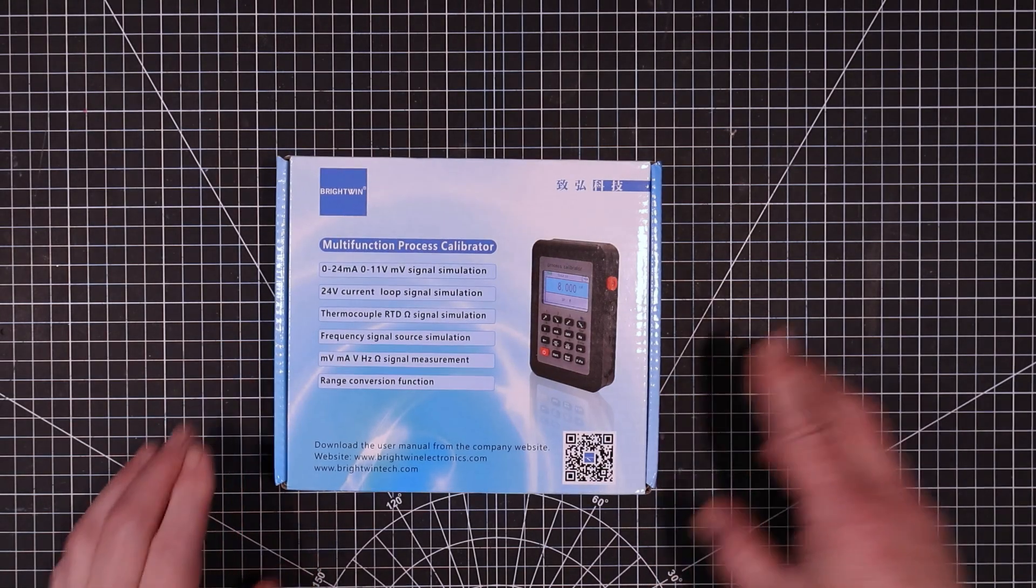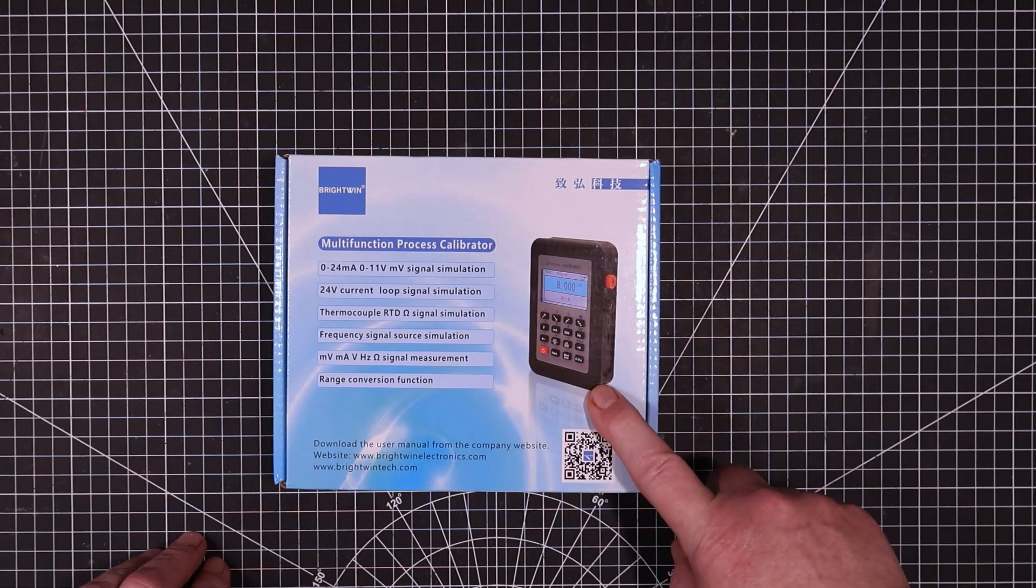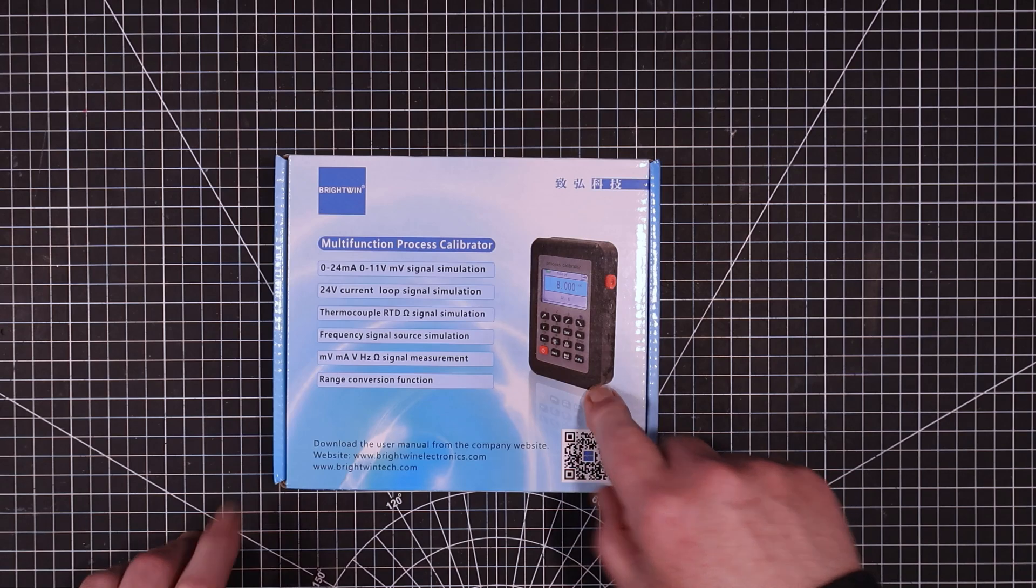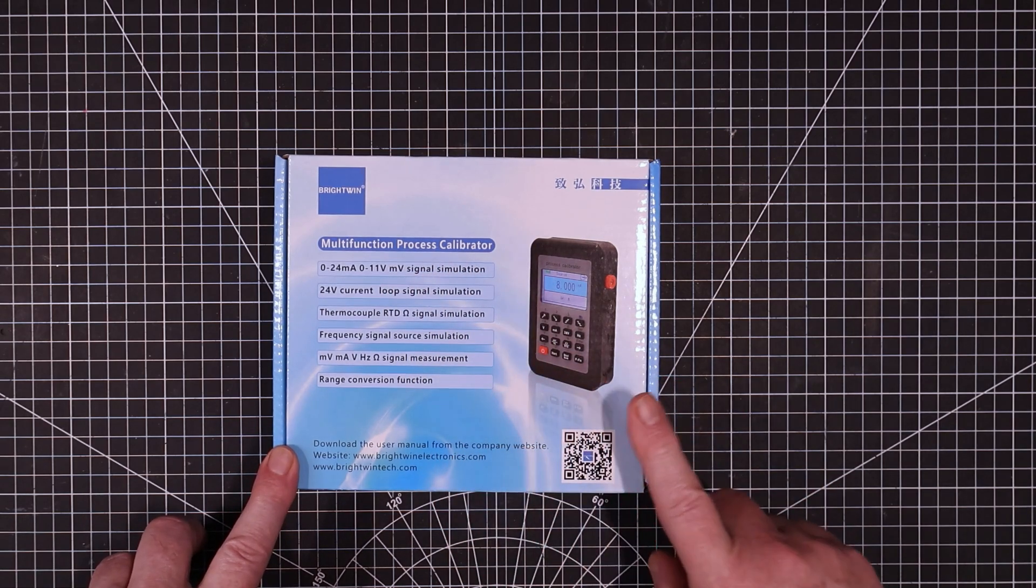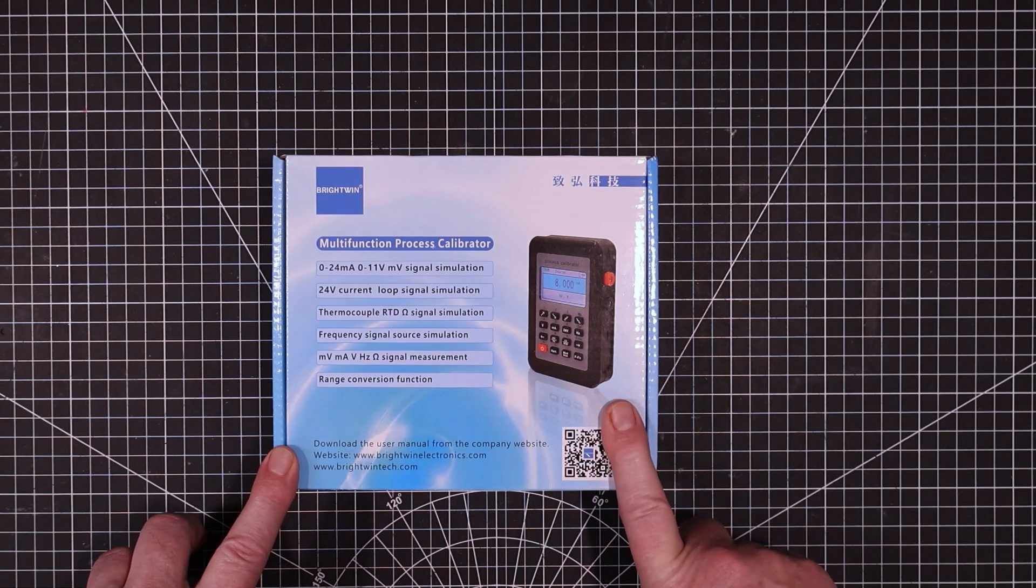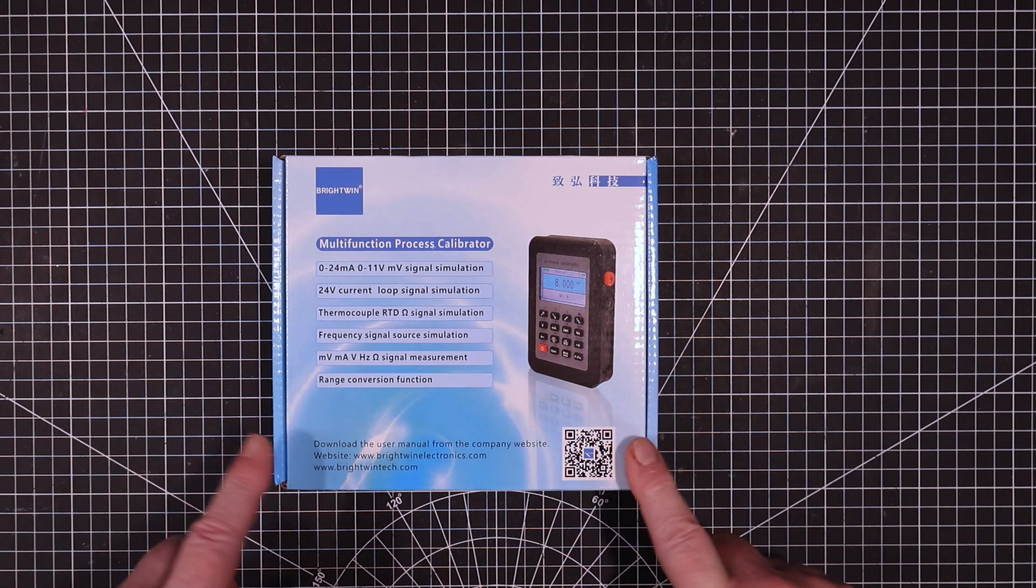Welcome back to the lab folks. What we've got today is this BrightWin LB02A multifunction process calibrator. I got this quite a while ago and it's just been sitting around the box so I decided I'm gonna get that and check it out today.